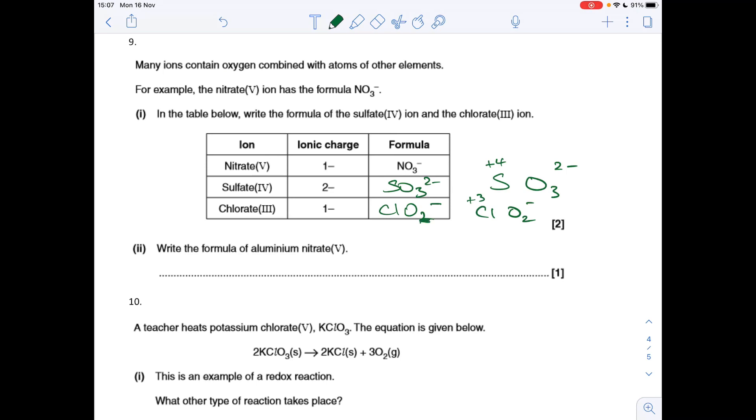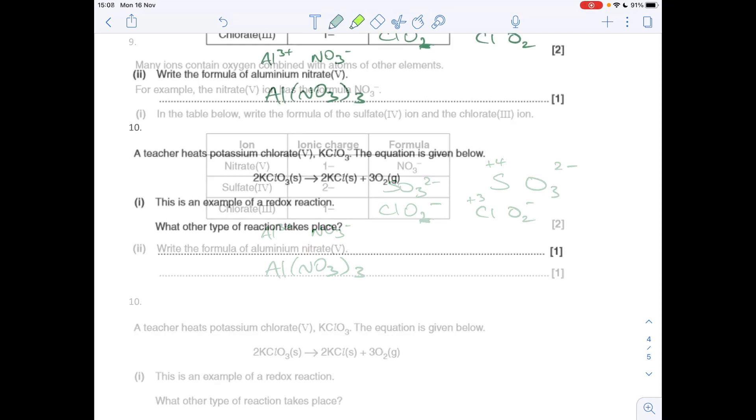Right, the formula for aluminium nitrate(V), so we've got aluminium is a 3+ ion. Nitrate(V), we're told in the table, is NO3-. So we need three nitrate(V) ions for every aluminium 3+. So it's Al(NO3)3.